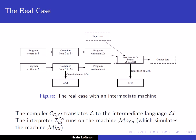The input to the abstract machine, or to the interpreter, is the program written in this intermediate language and the input data that we want to apply to the program. We run this interpreter on the abstract machine MO, and the result of this whole process is some kind of output.